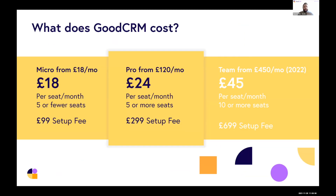Talking about cost — what does GoodCRM cost? It starts at £18 per month for a single user on our micro account, and the pro accounts start at £120 per month which includes five users, which works out at £24 per user per month. Head over to the resources section for today's session where you can request a full brochure with a complete breakdown of all the differences between our plans and pricing.